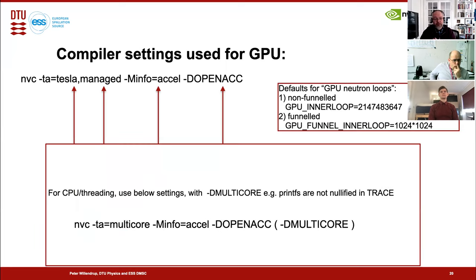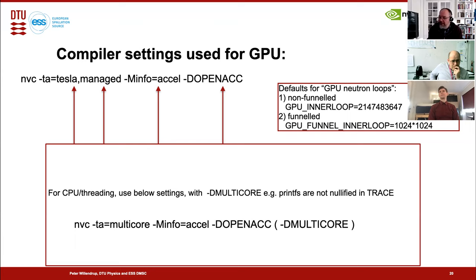There's also the possibility to run with the multicore target architecture, which emulates the GPU thread mechanism on CPU, giving another level of debugging access. If you do that, you can also raise the multicore define to get back your printfs. You also have control of the inner loop — the largest number of particle threads run on the GPU in one go — controlled with GPU_inner_loop or GPU_funnel_inner_loop, with defaults as shown.